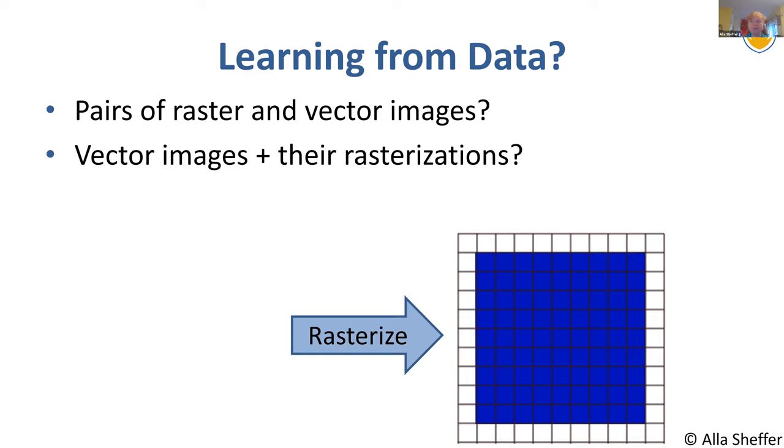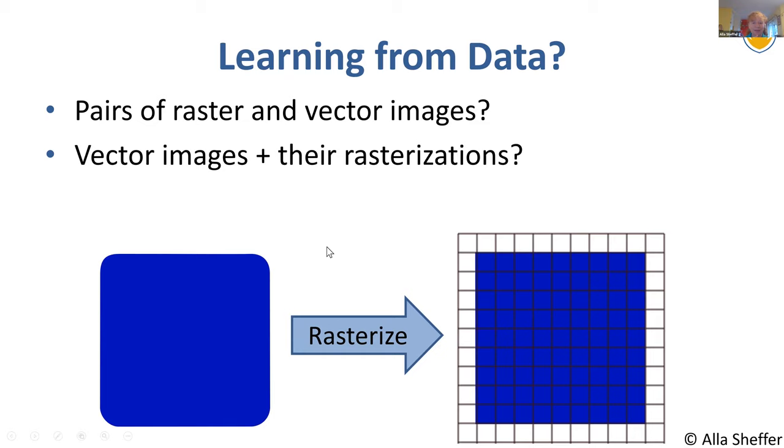If I rasterize this rounded cube, this is what I would get. However, as an observer, if I were to look at this raster input and you as an algorithm would produce this, I would probably be pretty upset. Why? Because this is not consistent with what I as a human expect, because humans make certain assumptions about data. So training on this pair is just not going to give us what we want. It's not going to give us results which humans will really not like.